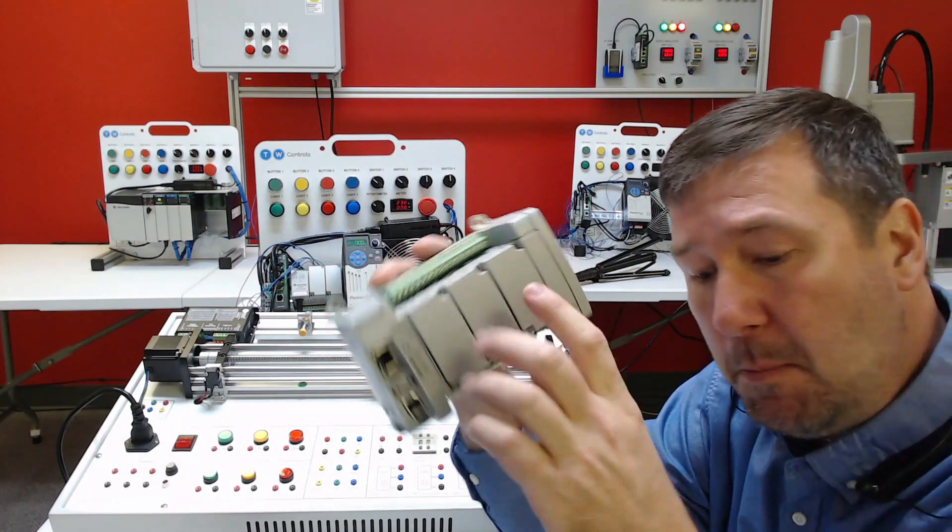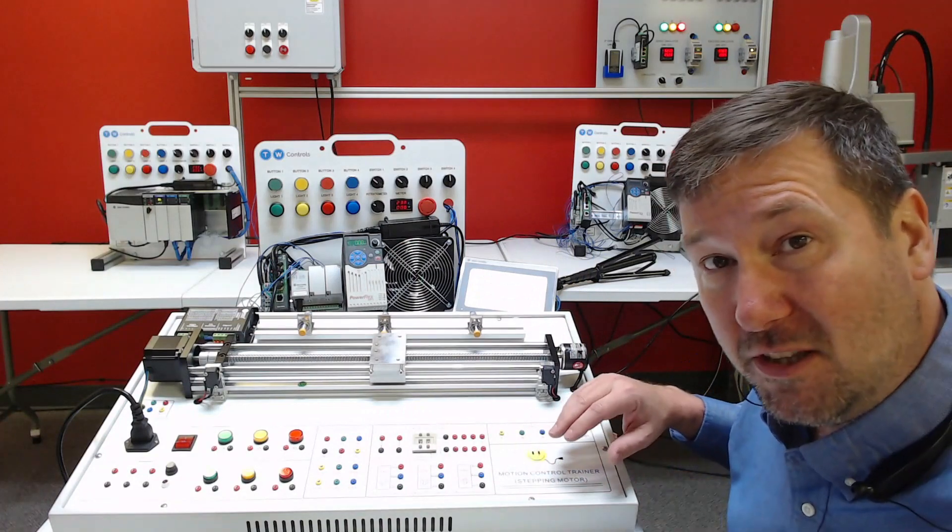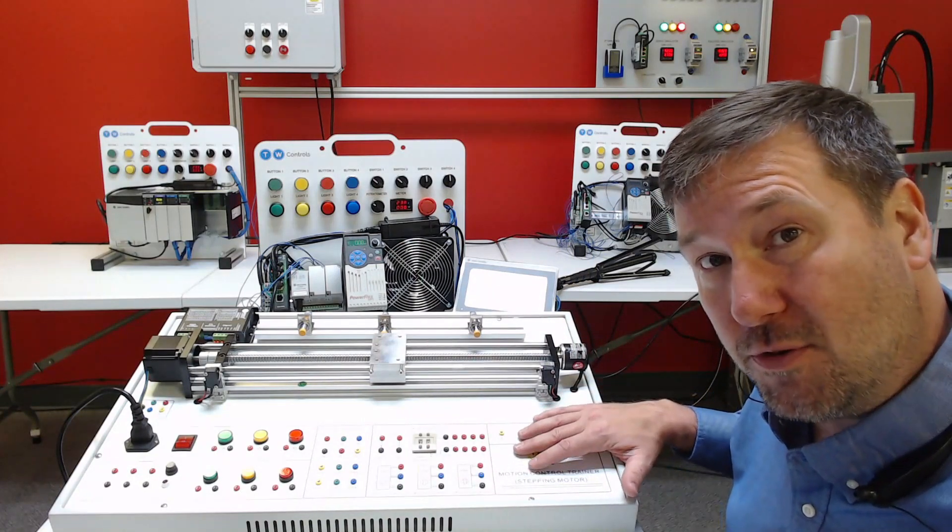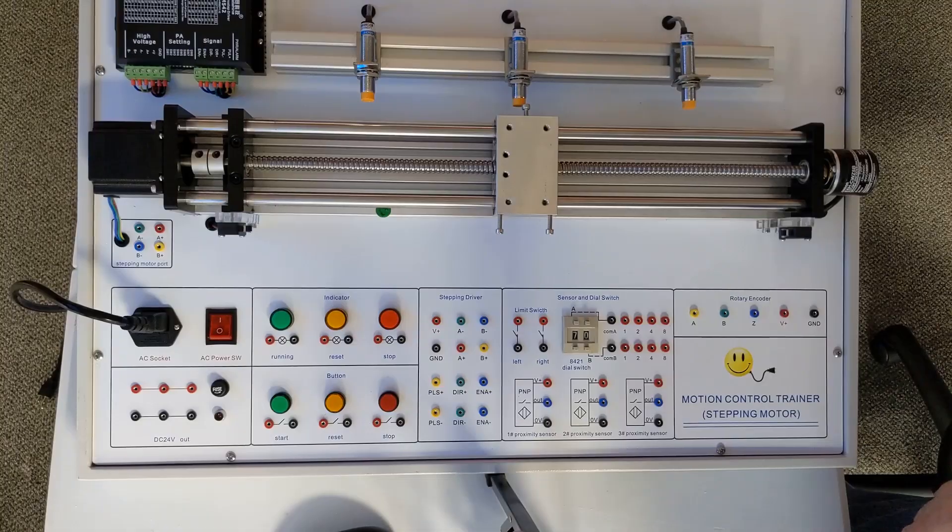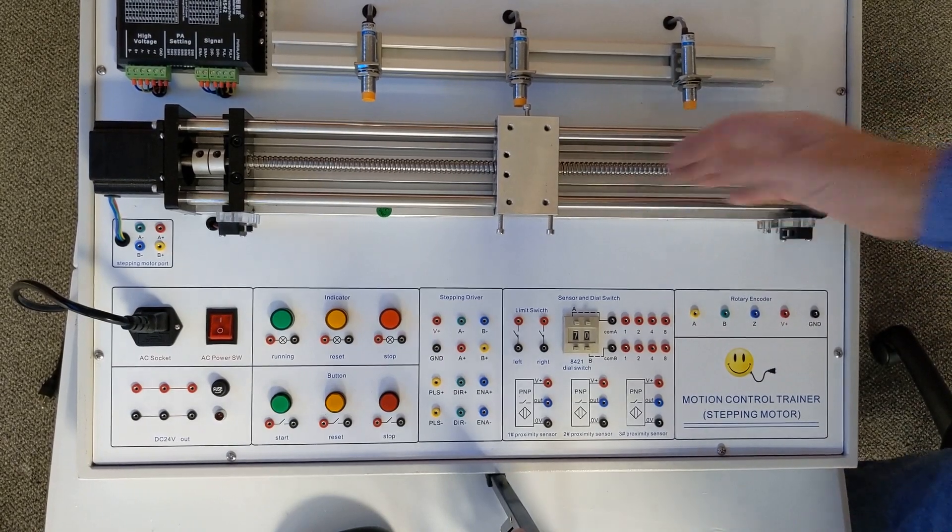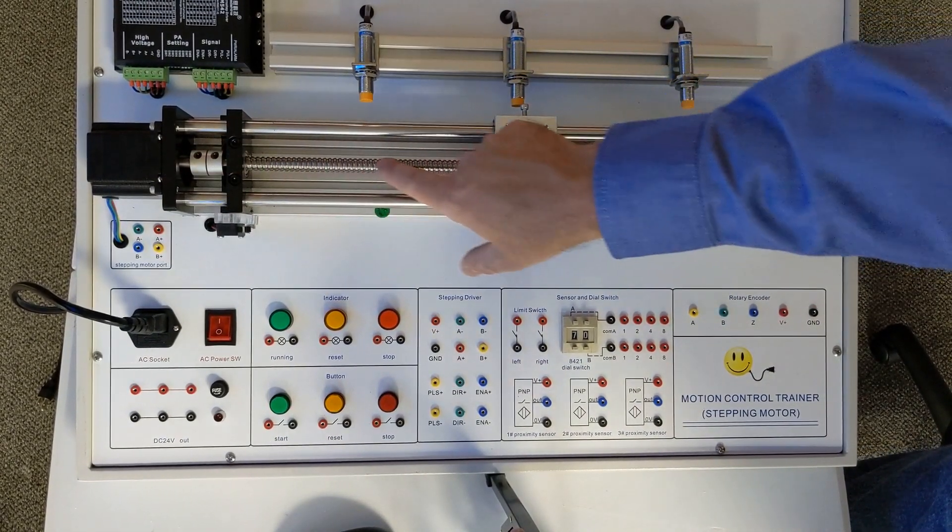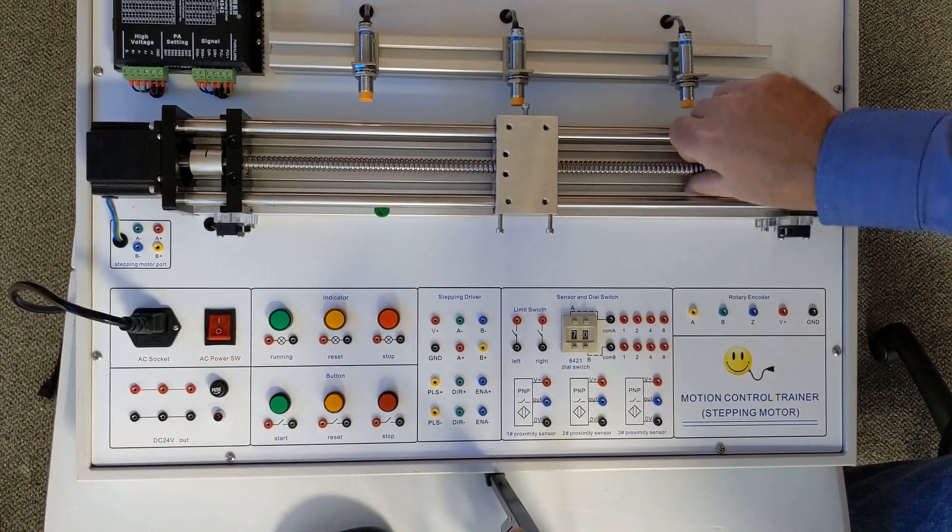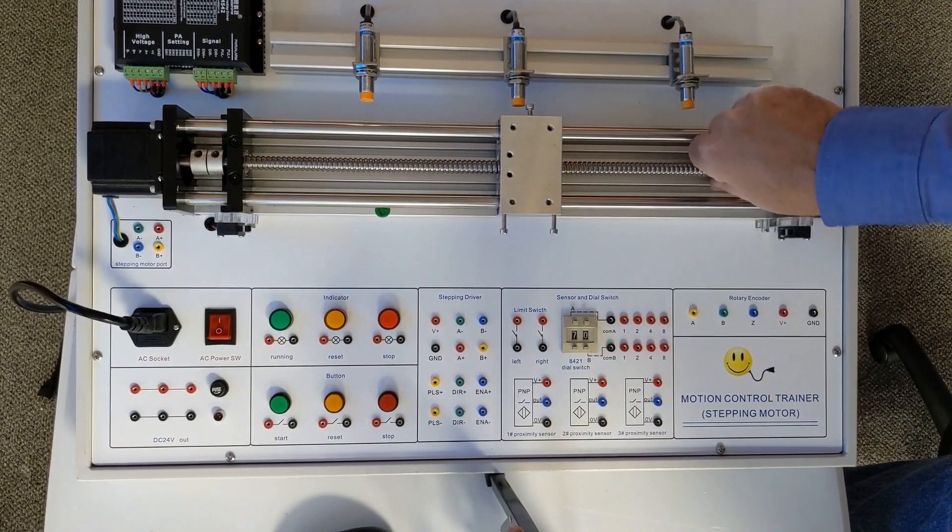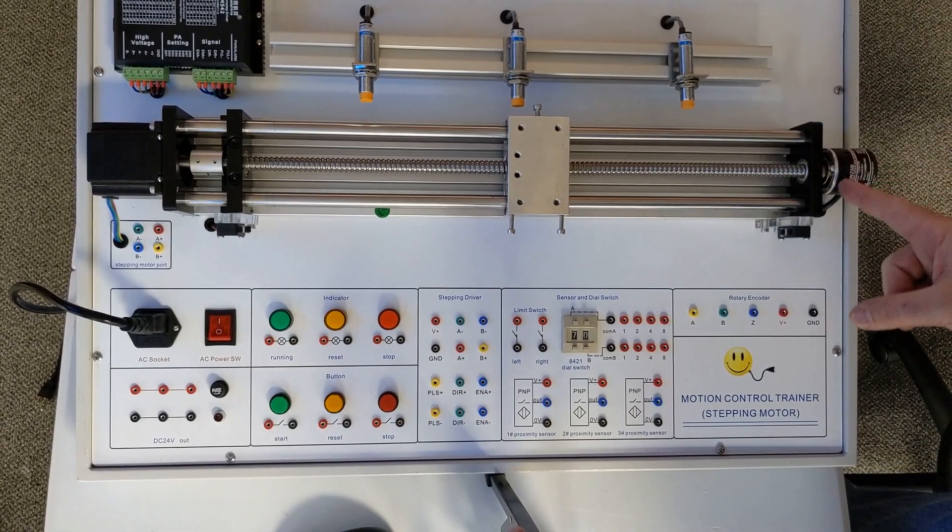Before we even start, let's go over this motion control trainer because you can learn a lot about stepper control before we hook the first wire to the PLC. Here's the motion control trainer and it consists of a linear actuator which has a stepper motor on this end. That stepper motor is turning the screw and as that screw turns it is going to drive this carriage back and forth.